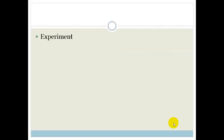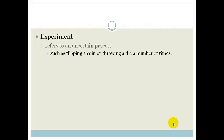First of all, an experiment. Now, I know some of you have done science and think of an experiment as something with Bunsen burners and chemicals. But in probability, an experiment refers to an uncertain process. So for example, flipping a coin or throwing a die a number of times.